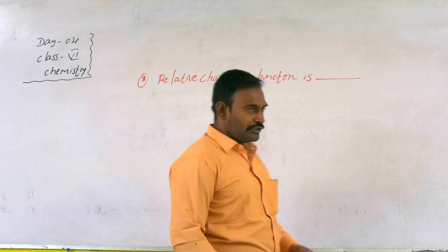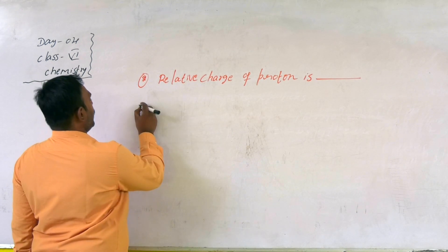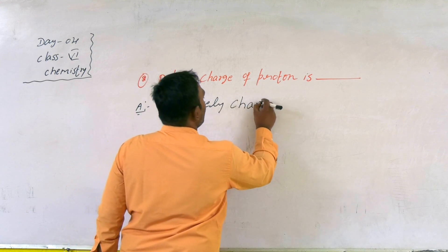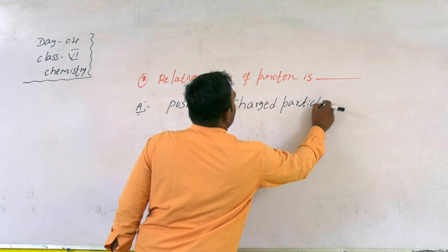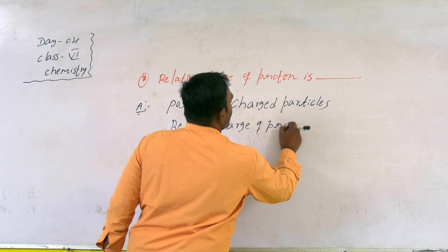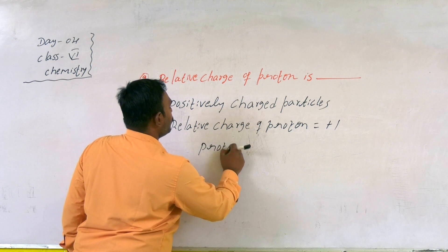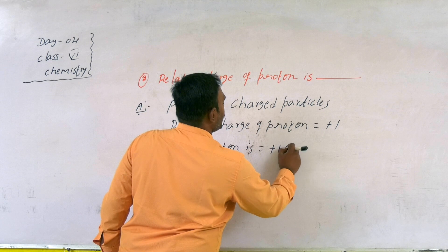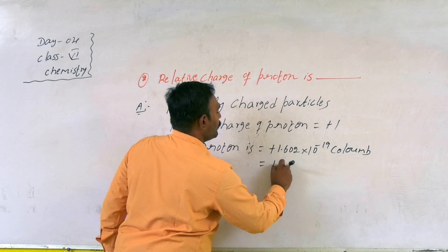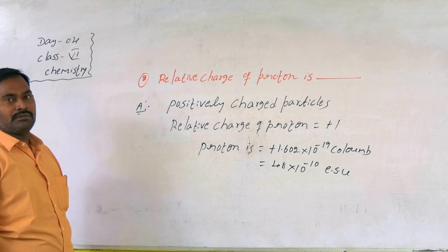The second question is: what is the relative charge of the proton? Proton is one of the fundamental particles present inside the atom, and protons are positively charged particles. Coming to the relative charge, the proton is plus 1 unit. The absolute charge of the proton is plus 1.602 into 10 to the power minus 19 coulomb. Otherwise, 4.8 into 10 to the power minus 10 ESU — electrostatic unit.